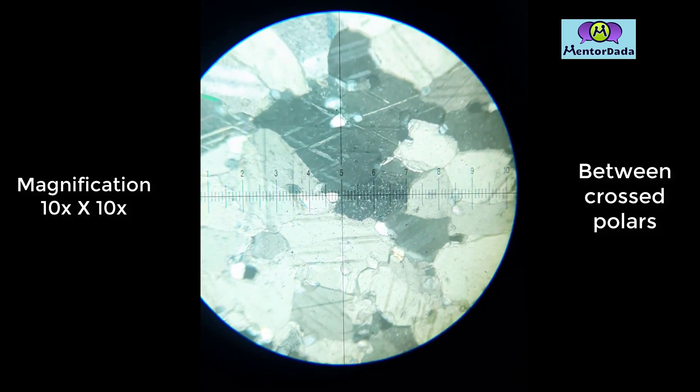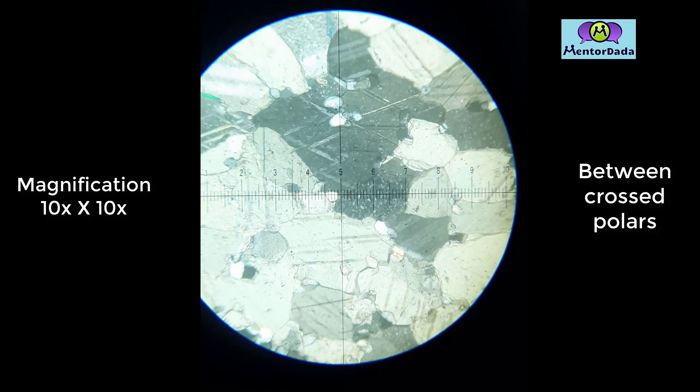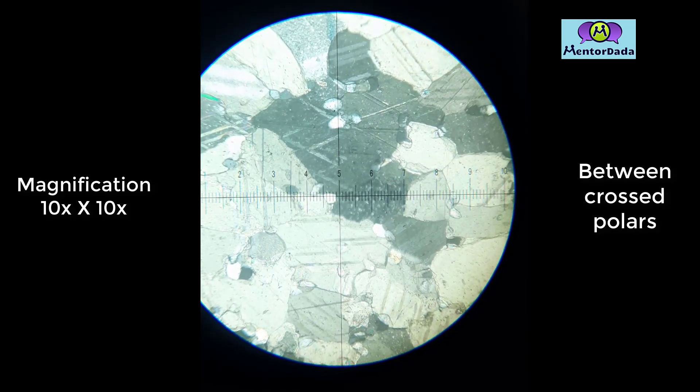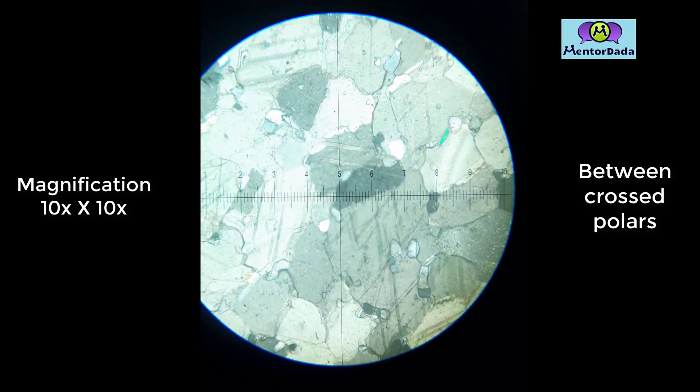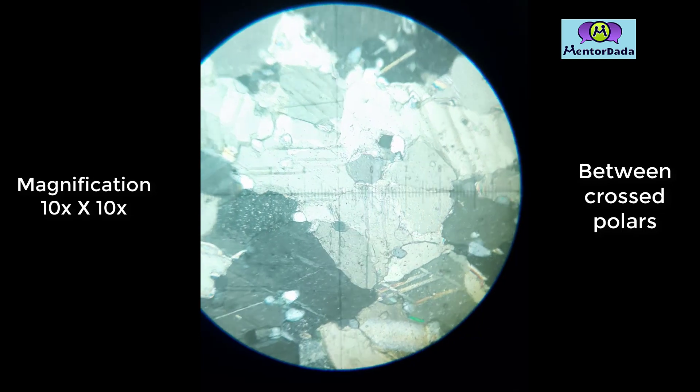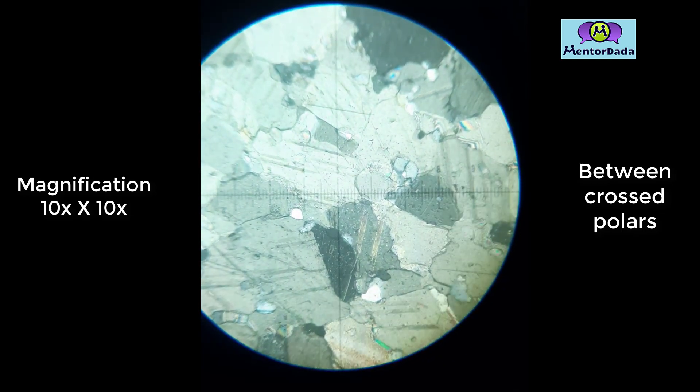As we rotate the stage, we can see the change of color. This is a property where we call this type of mineral an anisotropic mineral.